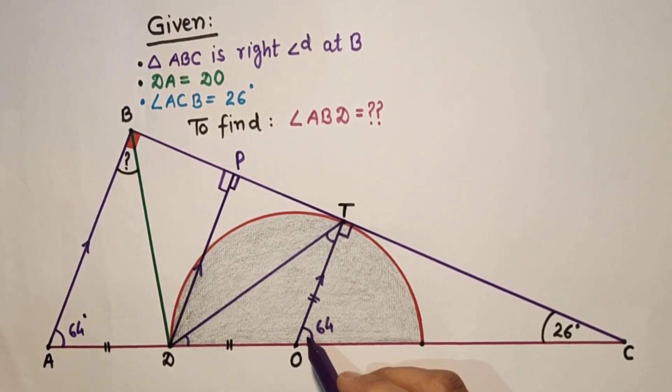This is 64, this is 64, and this is exterior angle and will be sum of these two angles. Since these two are equal, so this is 32, this is 32.